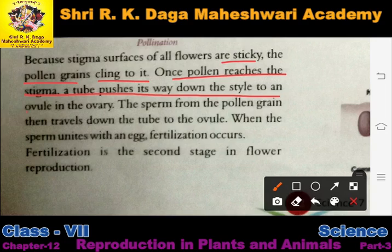Once pollen grains reach the stigma, a tube pushes its way down through the style to an ovule in the ovary. Ek baar jab pollen grains stigma tak pahunch jate hain, to jo tube hai woh style se hote hue ovary tak push down karti hai.